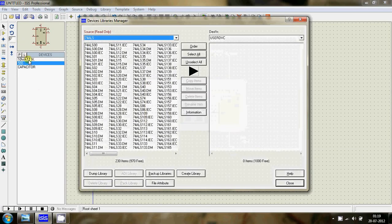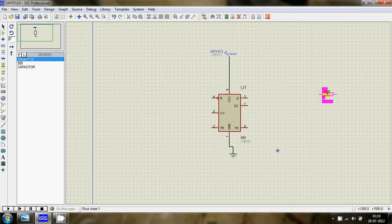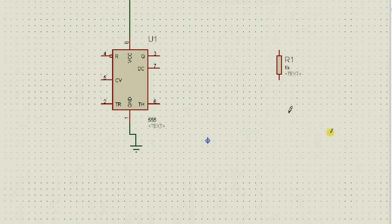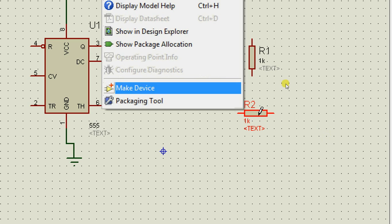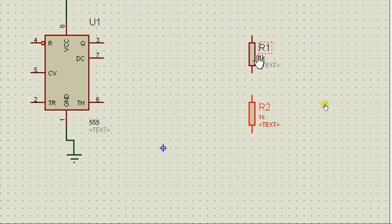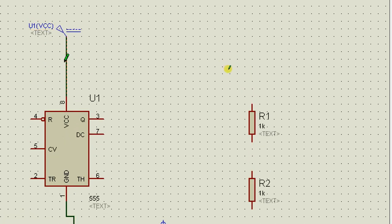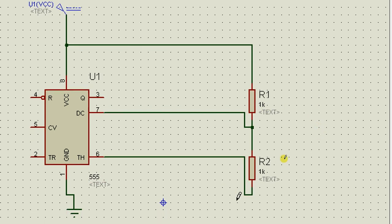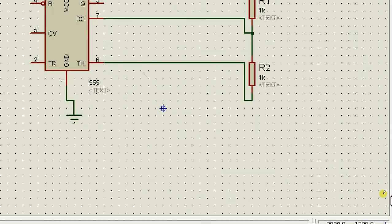I'm going to set this to 10 volts and ground pin 1. Now let me add the resistors. Let's make this nice and neat so that it's easy to understand what's happening inside the circuit.